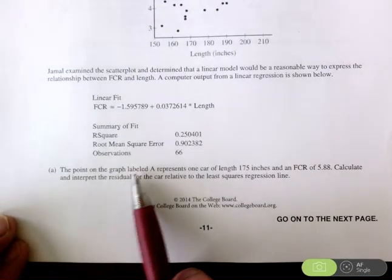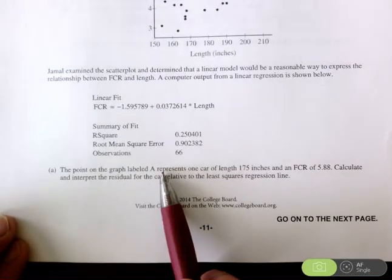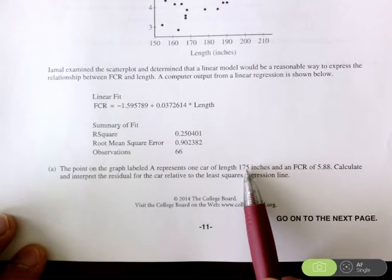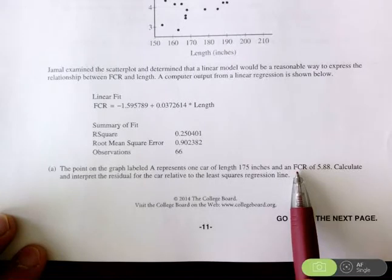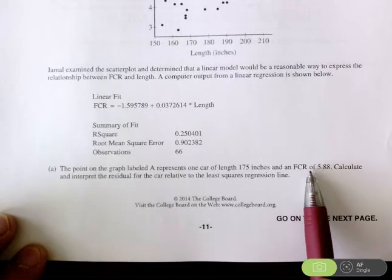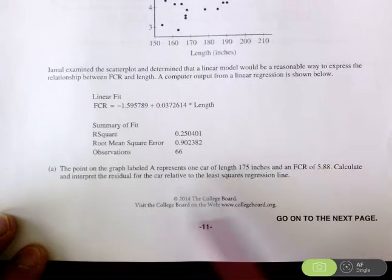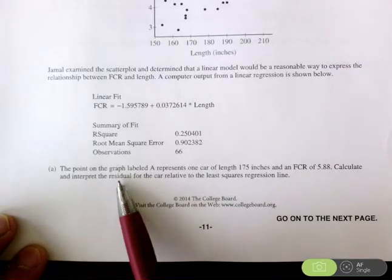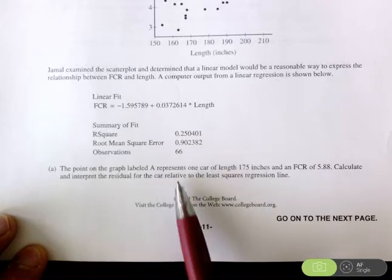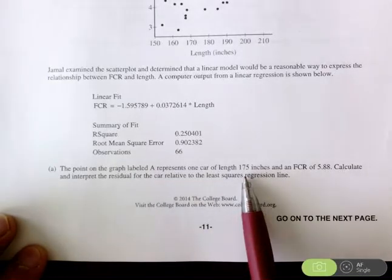The point on the graph labeled A represents one car of length 175 — that's the explanatory variable. The response variable is an FCR of 5.88; that is the actual value. Calculate and interpret the residual. You have to calculate the residual, but then go back and interpret what it means for the car relative to the least squares regression line.